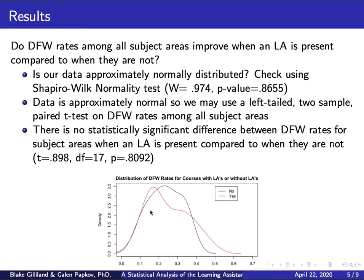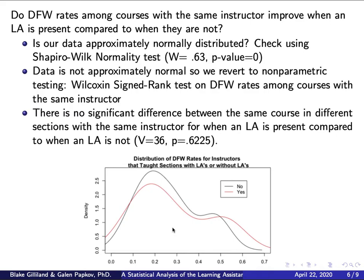There are no significant differences between the two distributions. For us to reject, we'd need the red curve to be significantly to the left of the black curve, but it is not. That's disappointing, though we think there may be reasons for this, which we'll discuss shortly.